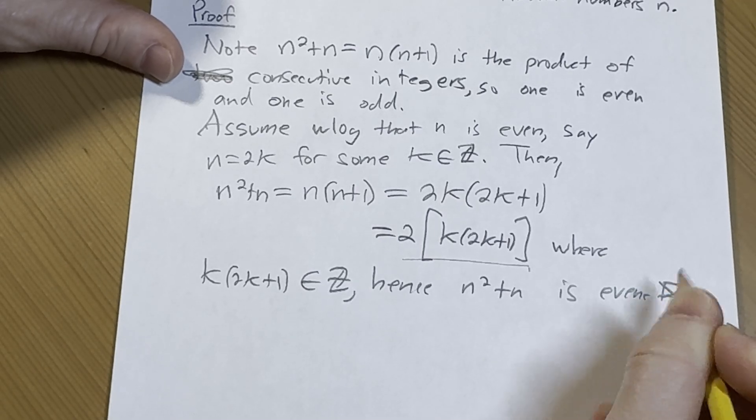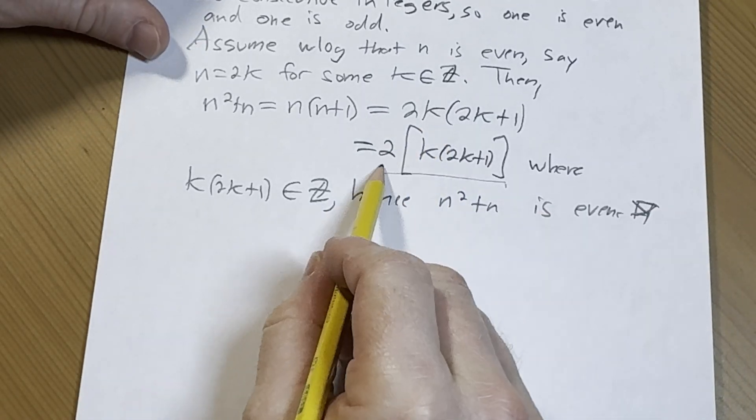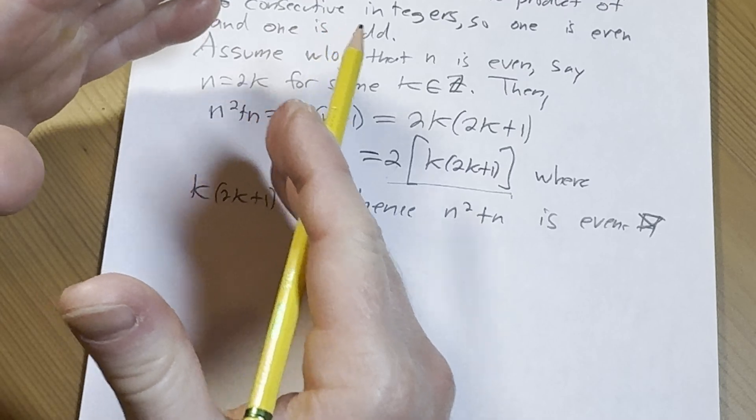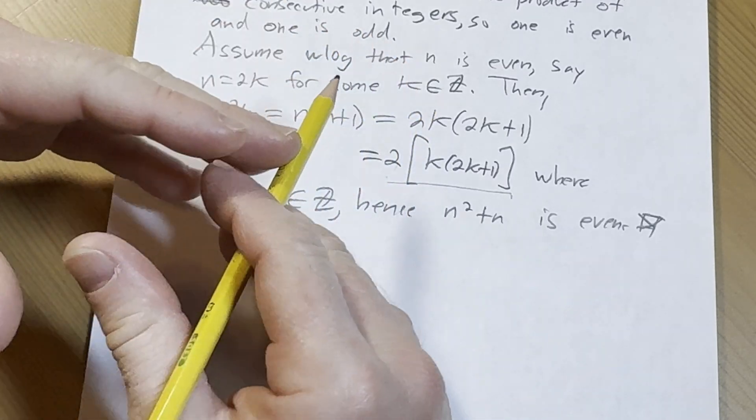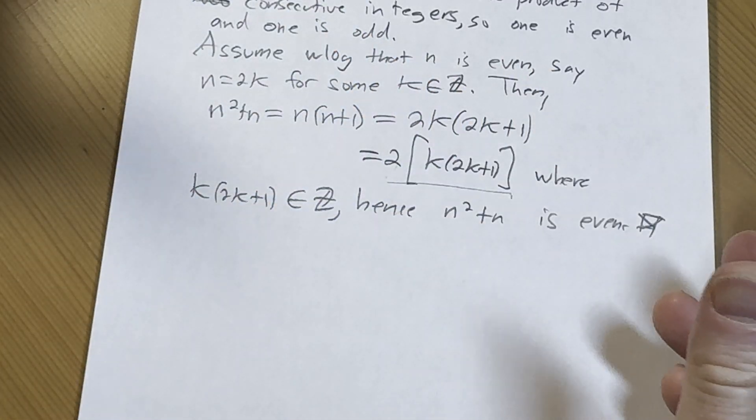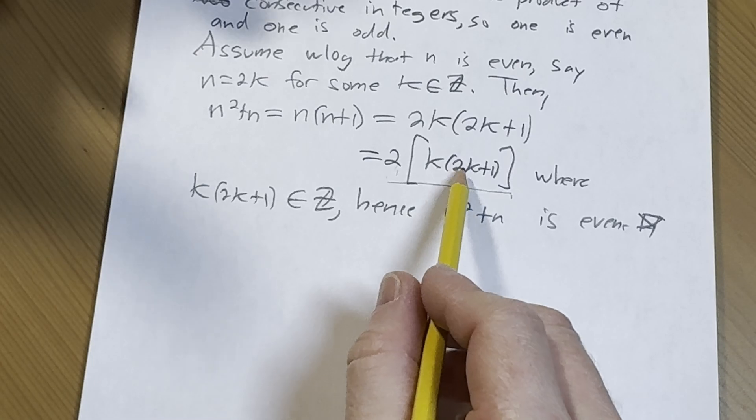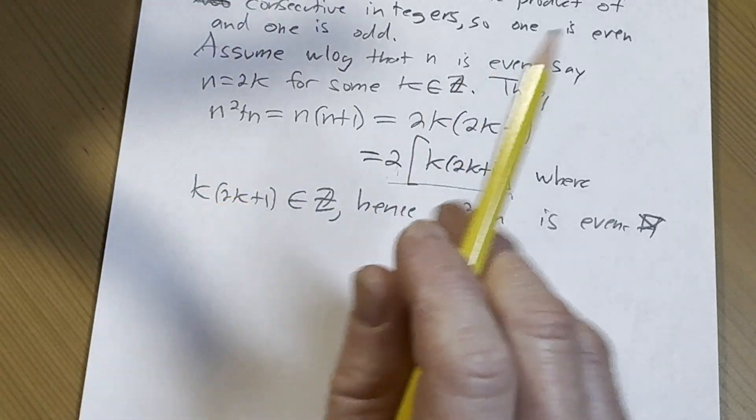And that completes the proof. You may be wondering, what's going on here? Well, remember the definition of even, right? N is even if n is equal to 2p for some integer p. So it's 2 times a number for some integer. And that's the proof.